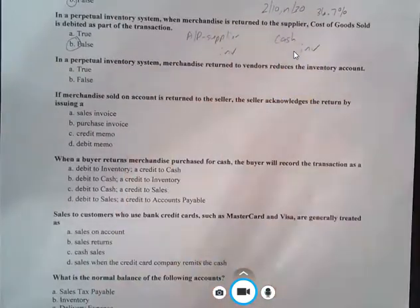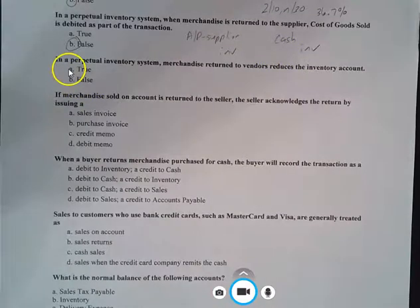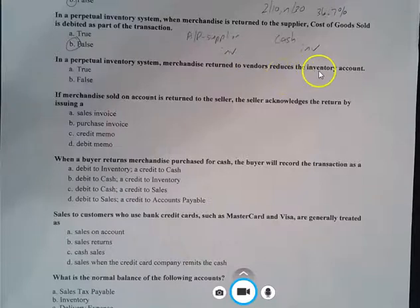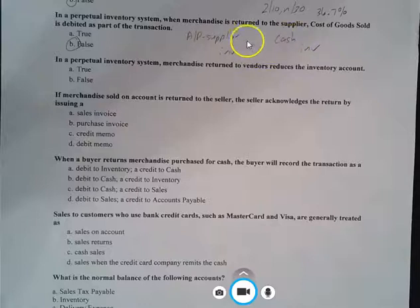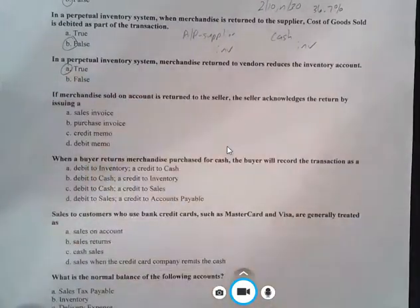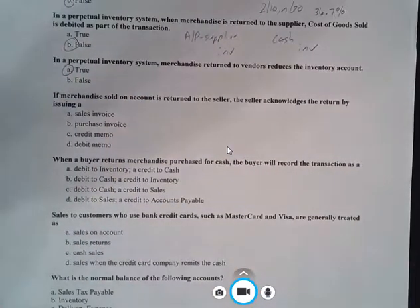Next true, false question says, in a perpetual inventory system, merchandise returned to vendors reduces the inventory account. Well, that's exactly what we have going on right here. Inventory is being credited in both of these situations, regardless of whether we paid cash or we owe for it. So, conversely, this is a true statement.